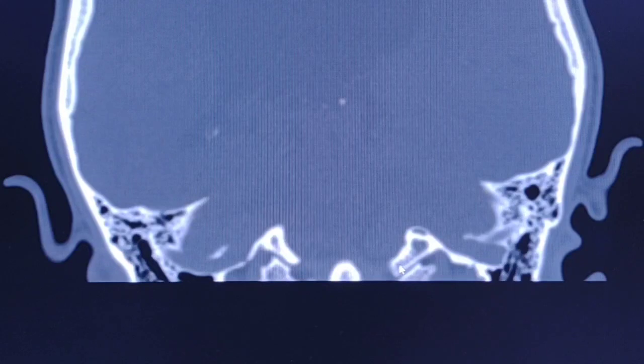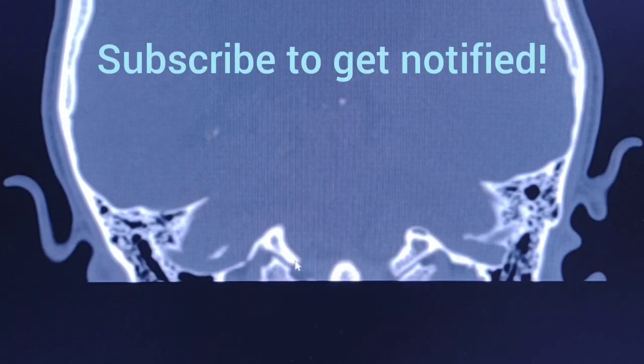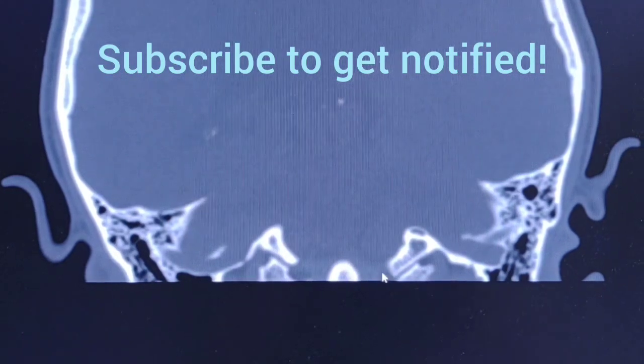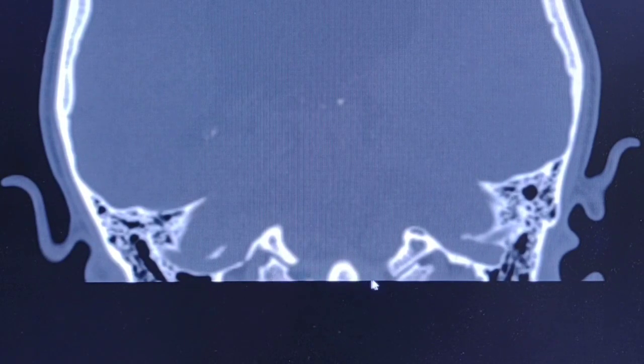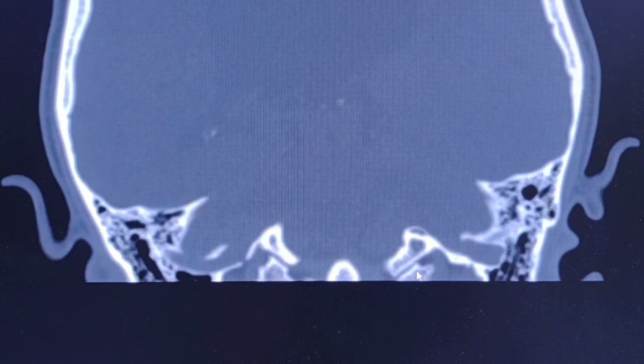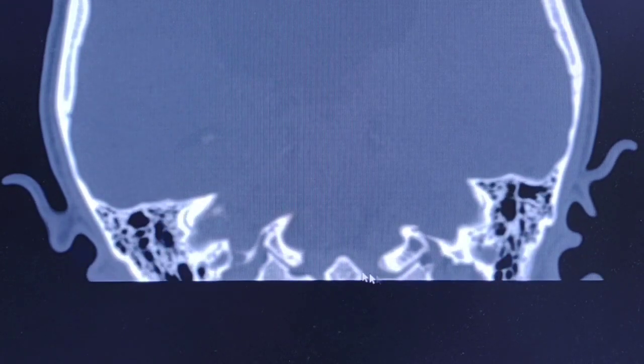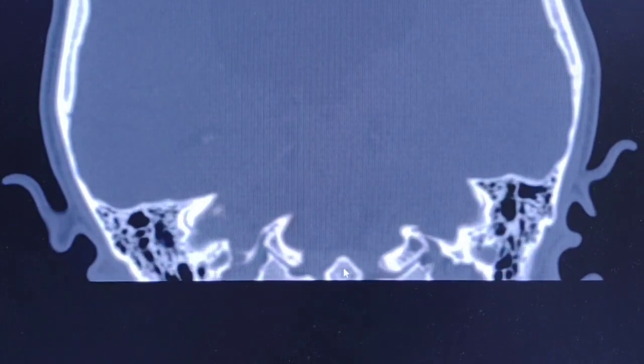Just keep in mind that here is the foramen magnum and here is the odontoid process of the C2 vertebra. This is the C1 vertebra, the atlas, and here is the odontoid process of C2. Let's have a closer look.